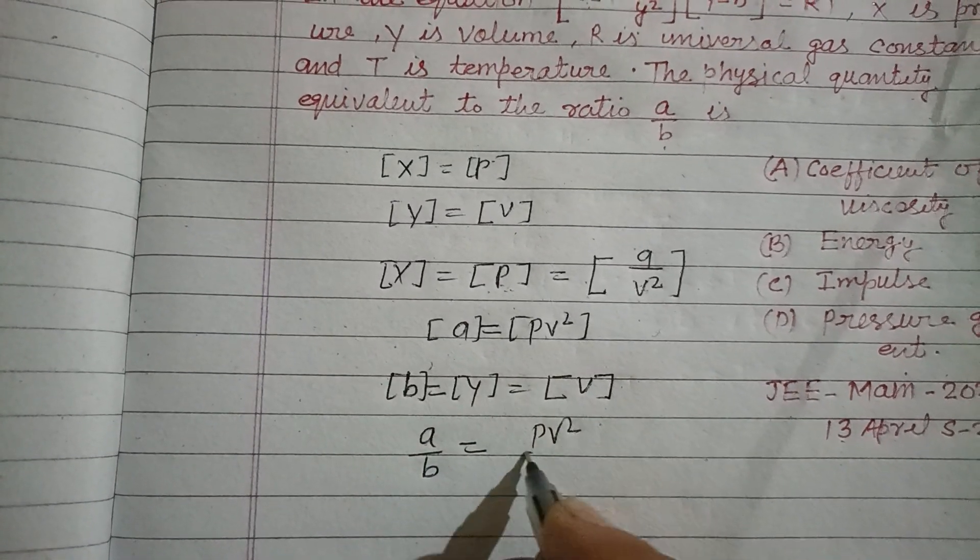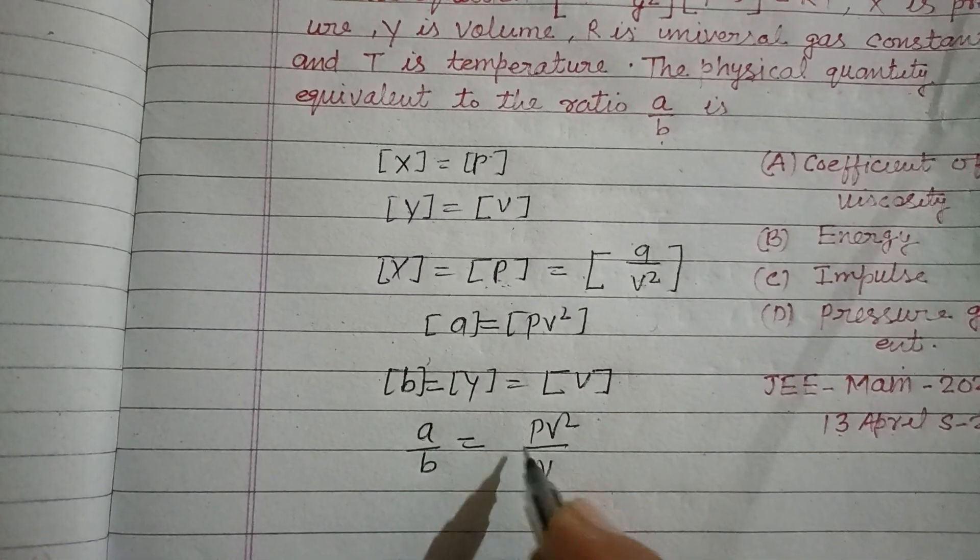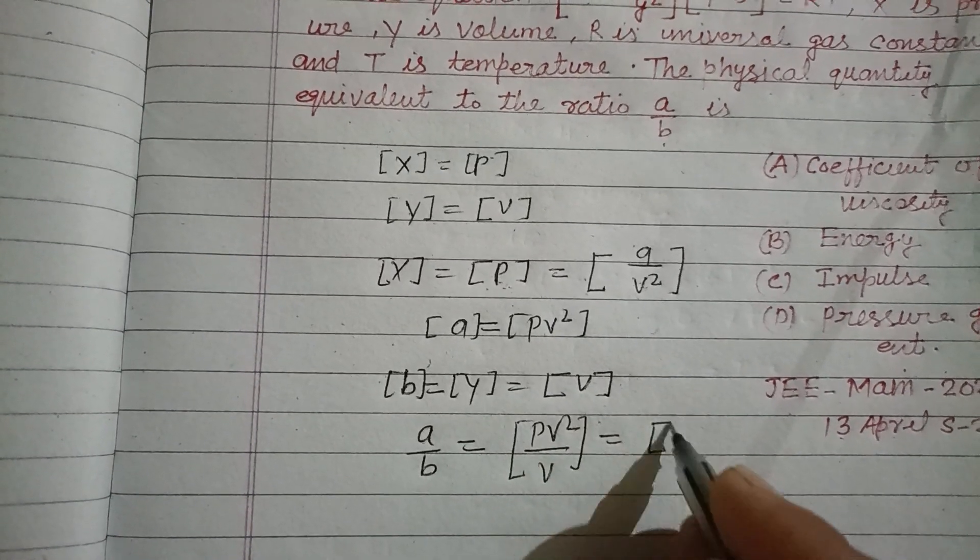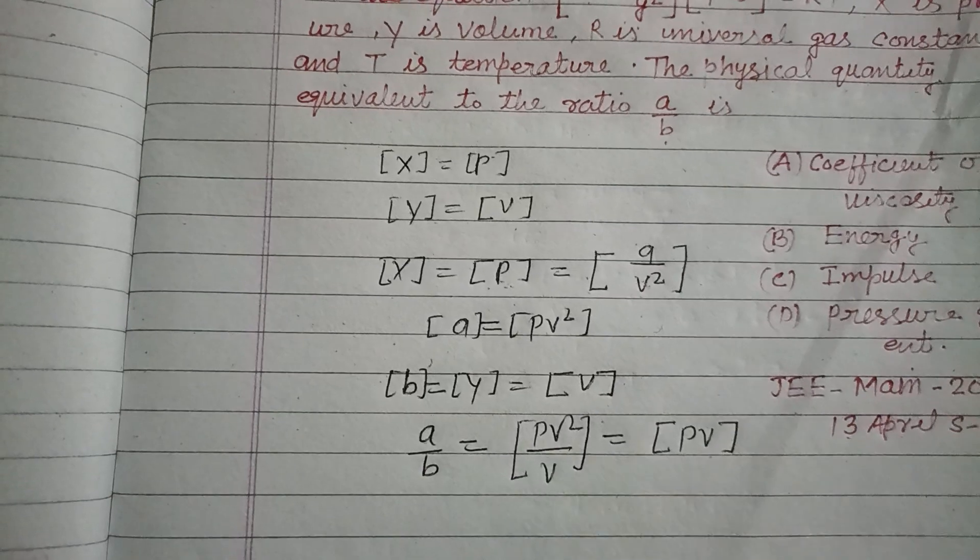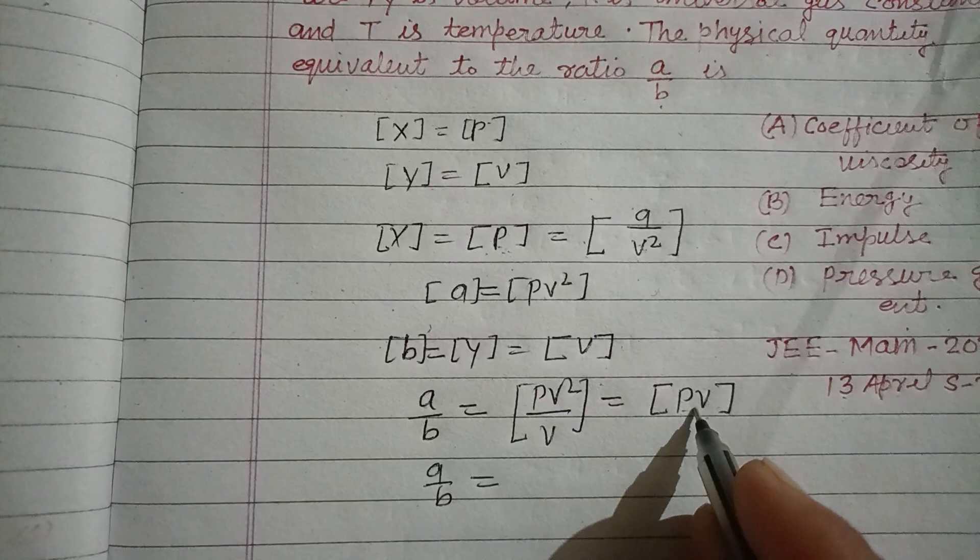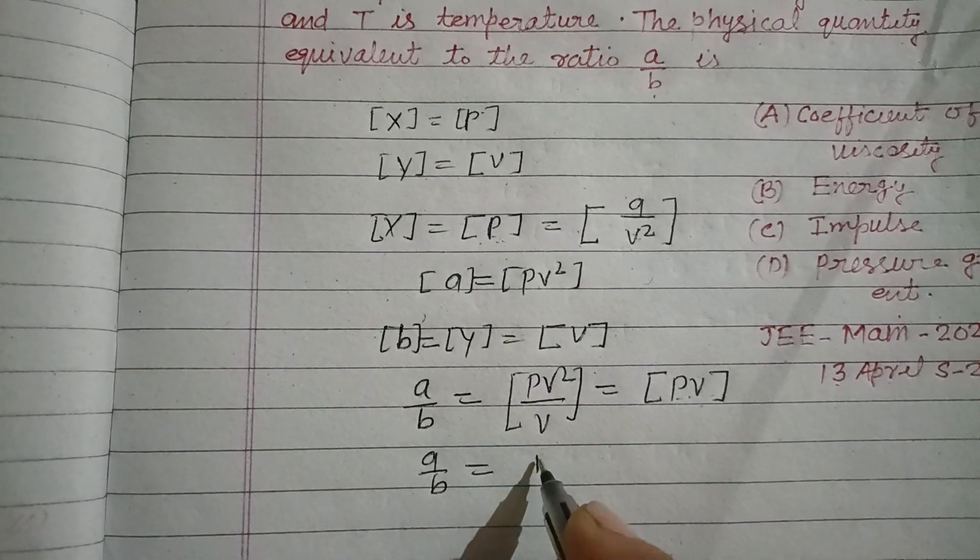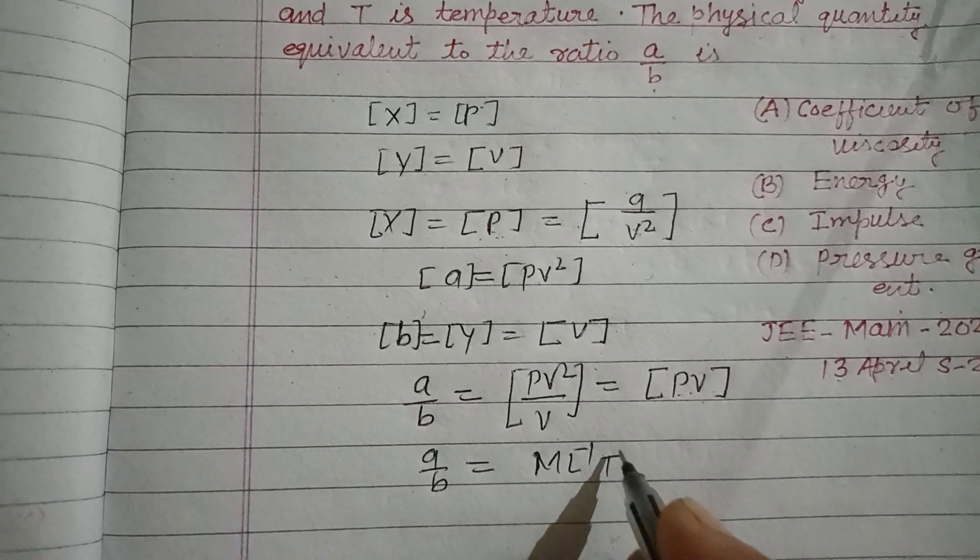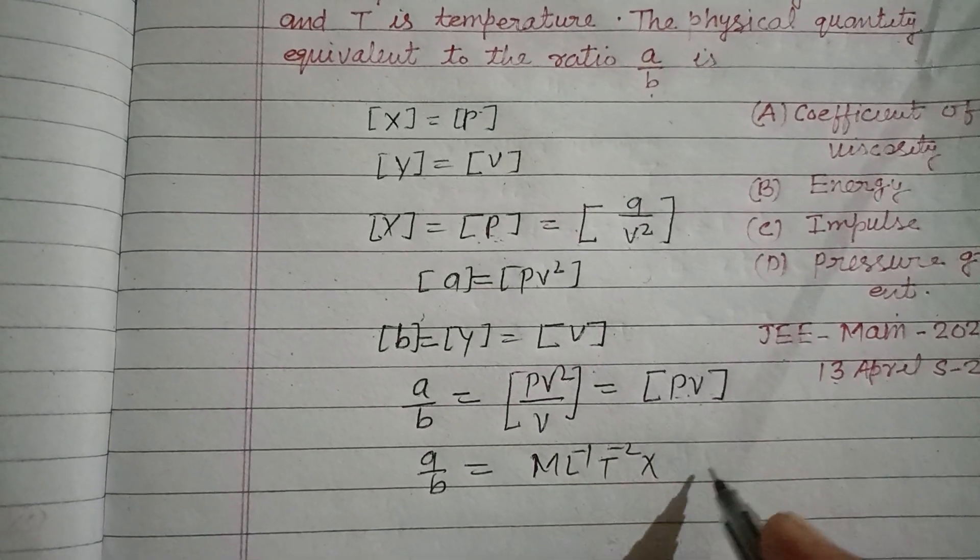So a/b equals the dimension of Pv²/v, which simplifies to the dimension of Pv. Pressure has dimension [ML⁻¹T⁻²] and volume has dimension [L³].